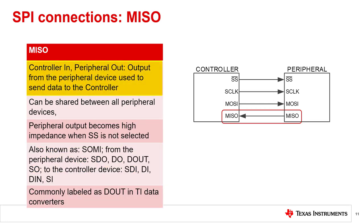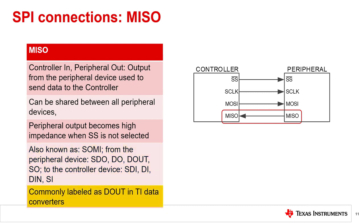MISO is controller in, peripheral out. This line is used to send data from the peripheral device out to the controller. If the controller has not selected the device with peripheral select, this line becomes high impedance, or high-Z, allowing multiple devices to share this line. The peripheral sends data out on the MISO line, synchronized with SCLK. On the peripheral, it may be known as SOMI, SDO, DO, DOUT, or SO. On the controller side, it may be labeled SDI, DI, or DIN. In many TI precision data converters, this digital output is commonly labeled as DOUT.